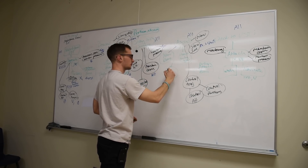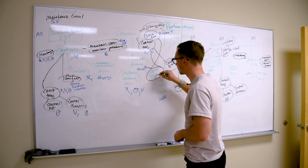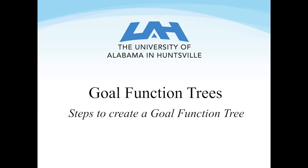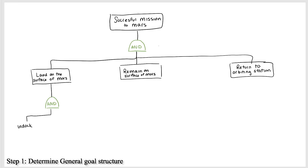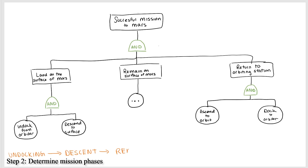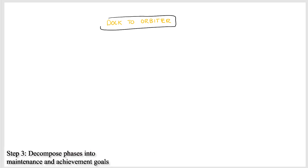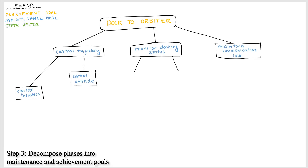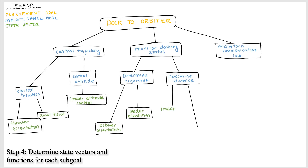Creating a high-level goal function tree can be done via brainstorming, such as we did on the whiteboard and paper. We use color coding to keep track of the types of goals. Collaboration along with expert opinion helped form our view of the mission. The general process for creation is the following: First, the designer needs to determine the high-level goals and form a general goal hierarchy. Second, determine the major phases of the system. Third, for each phase, decompose the highest goal of that phase into achievement and/or maintenance goals. Finally, determine the state vectors and functions associated with each new achievement and maintenance goal.